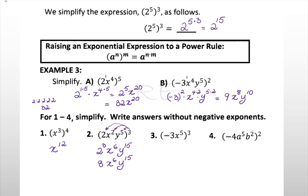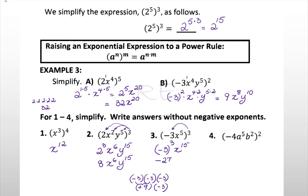We distribute the exponent 3 over (-3x⁵). It becomes negative 3 to the third, and x to the 5 times 3, which is 15. Negative 3 to the third is negative 3 times negative 3 times negative 3: that's positive 9 times negative 3. The answer is negative 27 times x to the 15th.